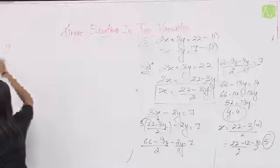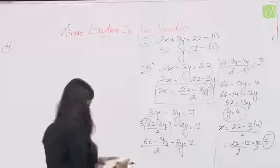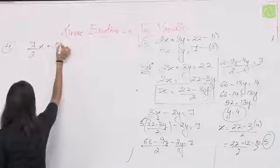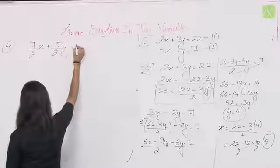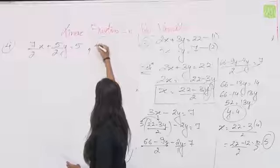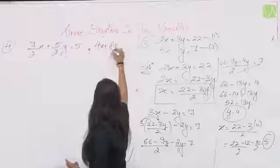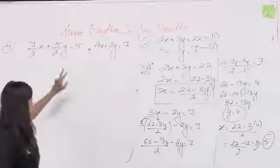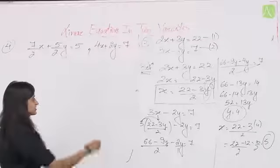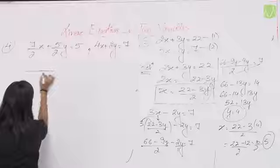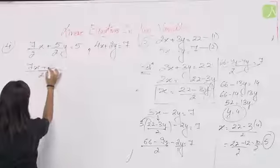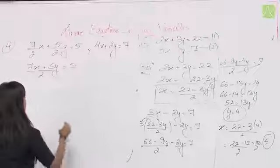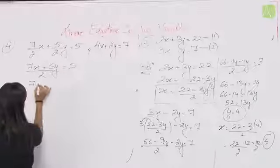Fourth question: (7/2)x + (5/2)y = 5 and 4x + 2y = 7। पहले fraction वाली equation को standard form में convert करते हैं। LCM 2 लेने पर: 7x + 5y = 10। Second equation already standard form में है: 4x + 2y = 7।